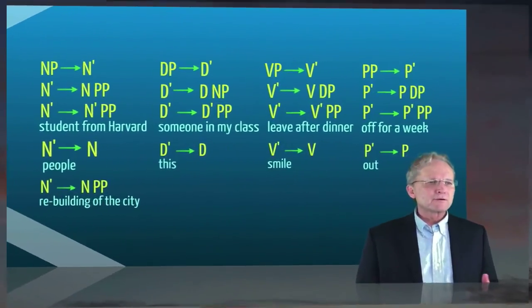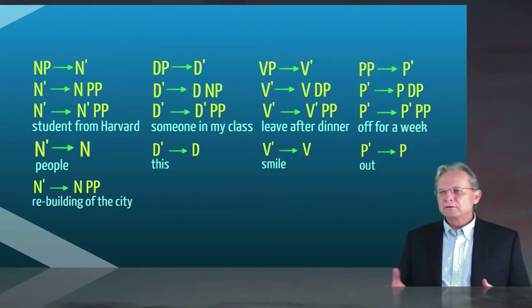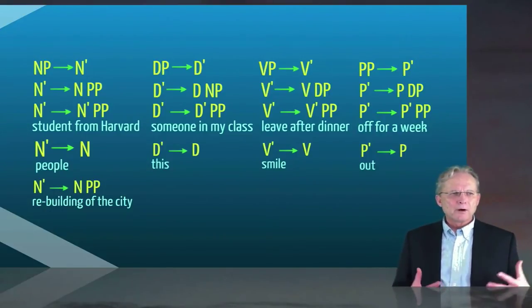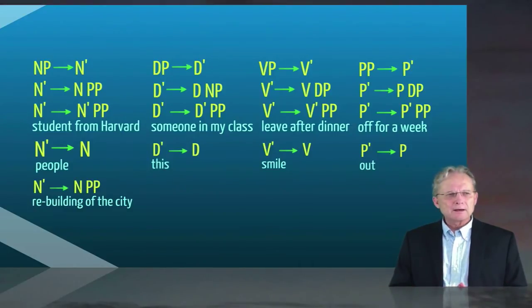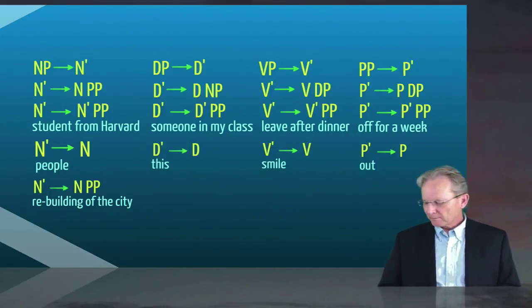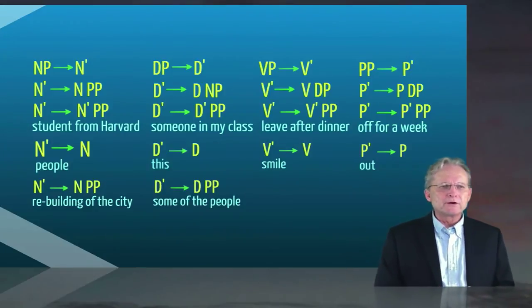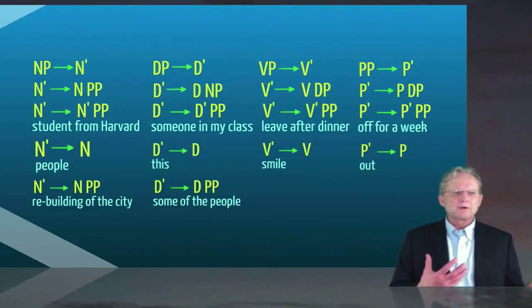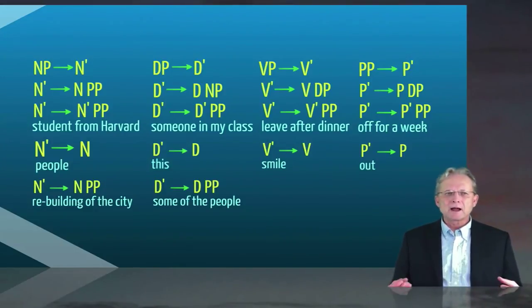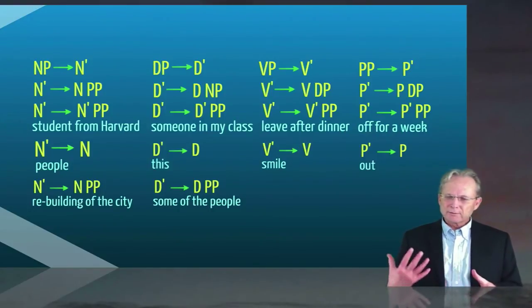Then you can also have structures like this, rebuilding of the city, where you have the N bar consisting of the head N rebuilding, and that has a complement, a prepositional phrase of the city. And some of the people, again, within the determiner phrase, you can have a D bar expanded as a D plus a PP complement.